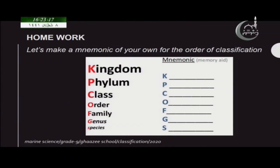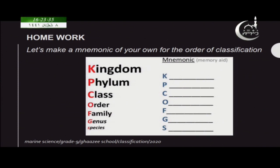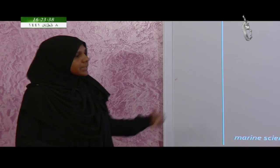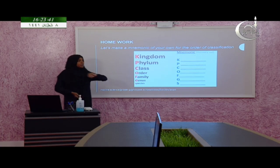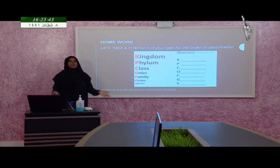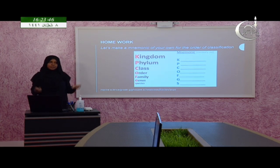Now it's almost the end of the lesson. Here are a few activities for you to do at home. You can show the answers to your teachers to check. The first thing is to make a mnemonic for the order of classification. As I showed you two mnemonics earlier, try to make your own — it will be much easier for you to learn this way.